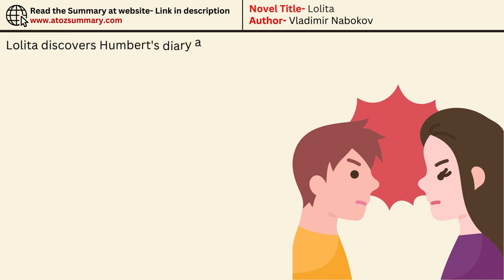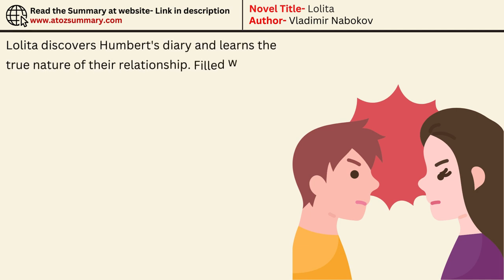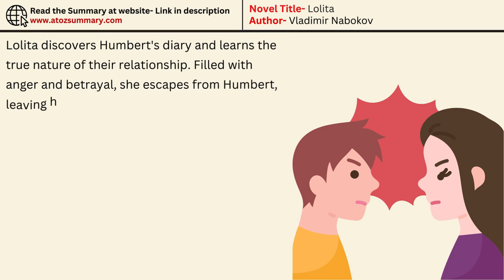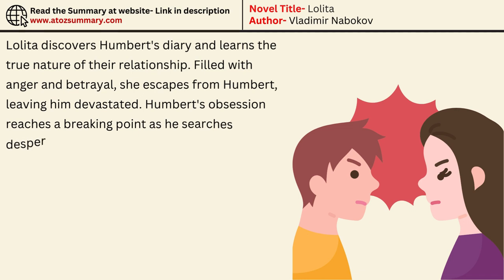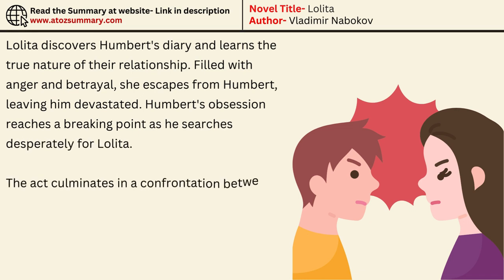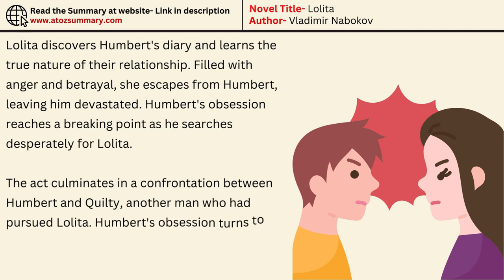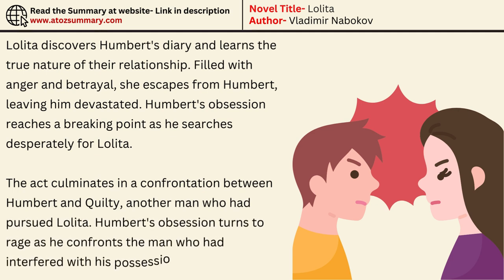Lolita discovers Humbert's diary and learns the true nature of their relationship. Filled with anger and betrayal, she escapes from Humbert, leaving him devastated. Humbert's obsession reaches a breaking point as he searches desperately for Lolita. The act culminates in a confrontation between Humbert and Quilty, another man who had pursued Lolita. Humbert's obsession turns to rage as he confronts the man who had interfered with his possession of Lolita.